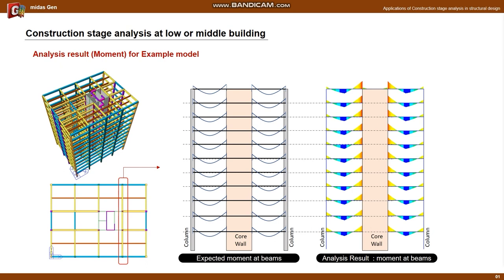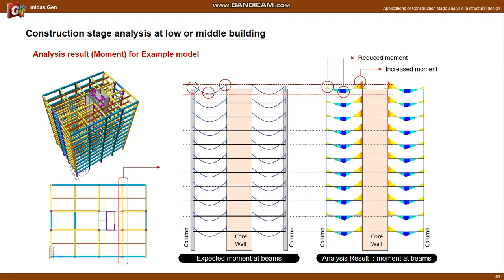Let's check the moment for a section containing a core. The expected moment diagram of beam is as follows. Since the bending stiffness of the core is greater than the column, the beam moment at the core will be slightly larger than the moment at the column. However, the actual analysis results showed that the moment at the core wall increased more and was smaller at the column, as shown below. The moment at the middle of the beam also had a smaller value than expected.